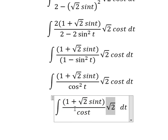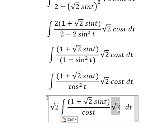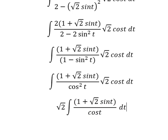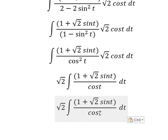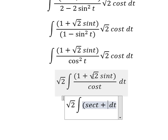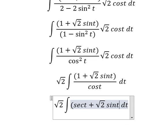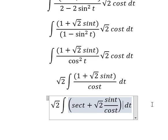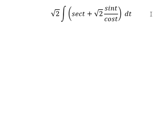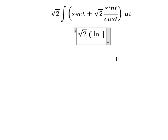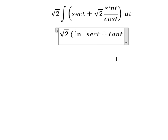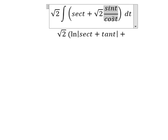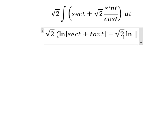Now I will take this factor outside. So 1 divided by cos(t) is secant of t, and cos(t) over cos(t) simplifies. The integration of secant of t gives us ln of the absolute value of secant(t) plus tan(t). We also have negative square root of 2 times ln of the absolute value of cos(t).